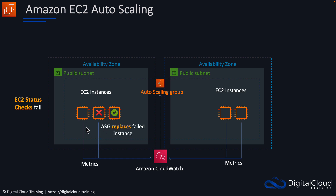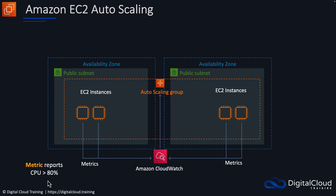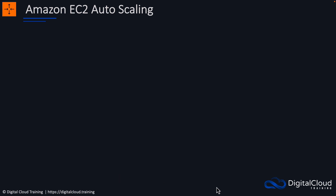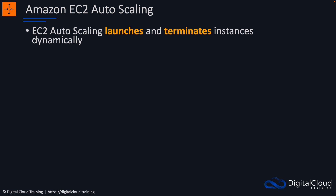That's replacing a failed instance. In another example, a metric is reported showing that the aggregate CPU across the instances is greater than 80%. We might have configured an alarm via auto scaling that says once utilization exceeds 80%, we want more instances to be launched. CloudWatch will notify auto scaling to scale, and it will then launch an instance, adding instances because we need more capacity for our application.